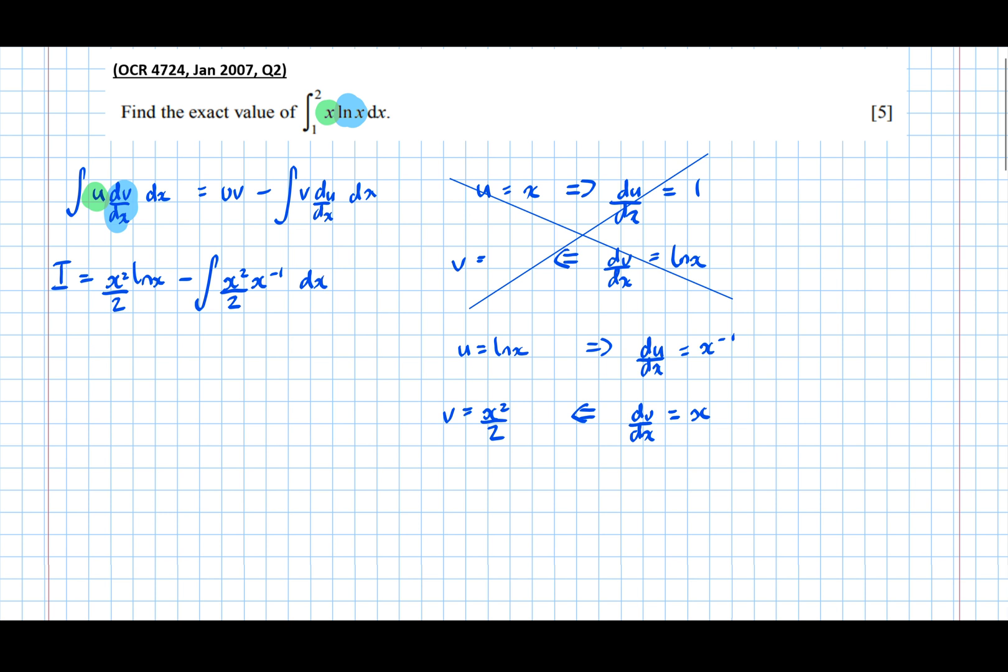Which is equal to x squared over 2 log x minus... and before we can integrate this we need to simplify it, so x squared times x to the minus 1 is just x over 2 dx.